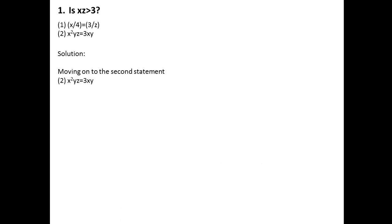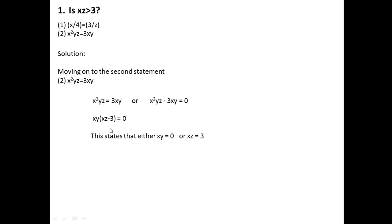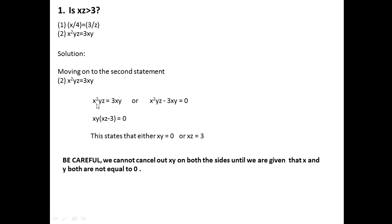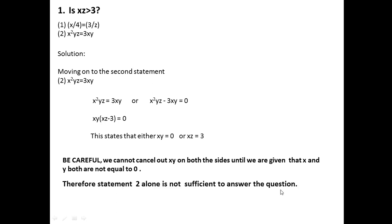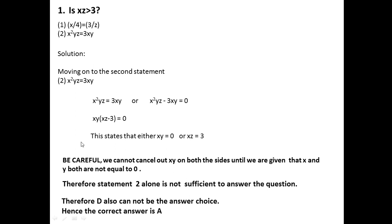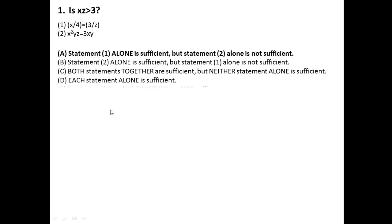Now look at statement two: X²YZ is equal to 3XY. Taking 3XY to the left-hand side and factoring out XY, we get XY multiplied by (XZ minus 3) is equal to 0. This means either XY is equal to 0 or XZ is equal to 3. We cannot cancel out XY from both sides unless we know X and Y are both non-zero. So statement two alone is not sufficient. Therefore D is cancelled out, and the answer is option choice A — statement one alone is sufficient but statement two alone is not.